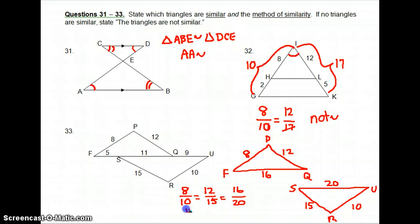8 over 10 is 4 over 5. 12 over 15 reduces to 4 over 5. And 16 over 20 reduces to 4 over 5. So they are similar.